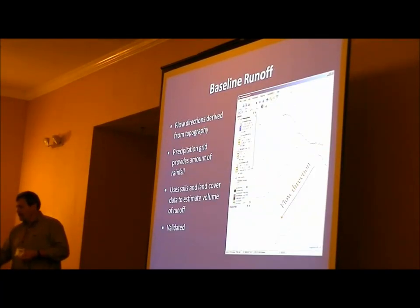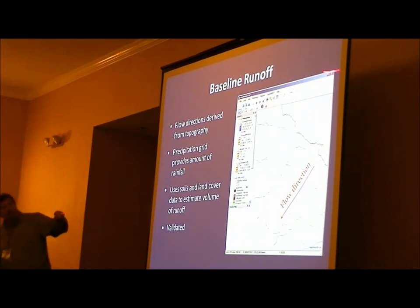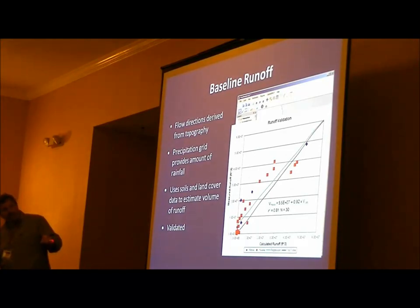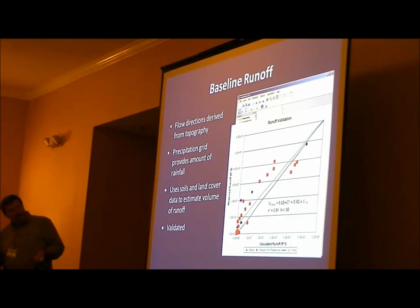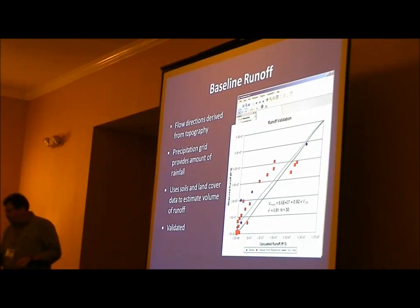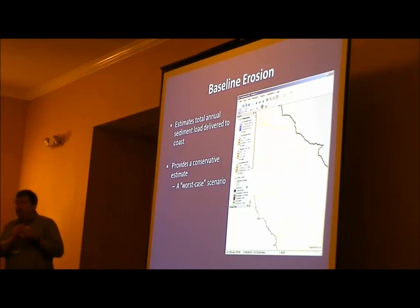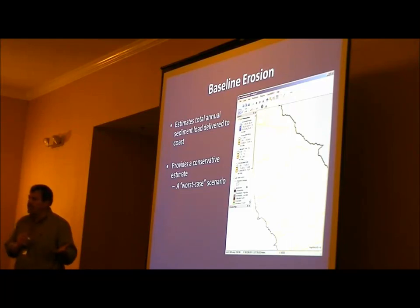What do you get out of this? Let's go through it. Runoff: we get a nice stream network showing the volume of runoff. We validated this right off the bat for a number of smaller watersheds in Hawaii where they had good rainfall data, and it does pretty well. The black line is the one-to-one line of calculated versus predicted runoff. Erosion: this is the accumulated erosion from an annual run — showing the annual sediment load entering the marine environment.